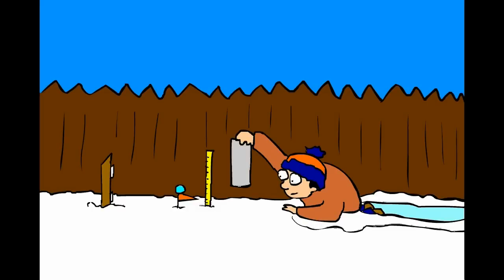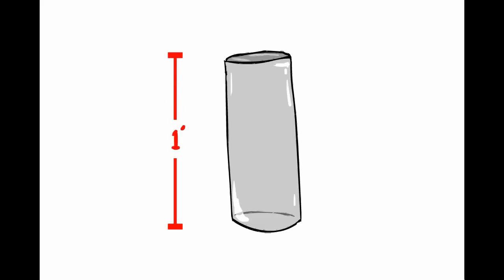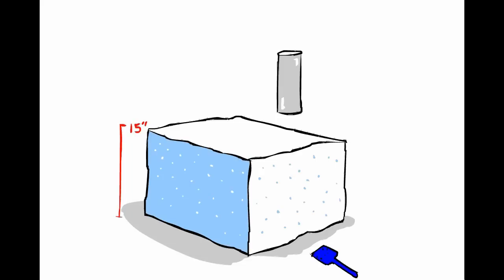This may have happened to you. You go to take a snow core sample when you have more than a foot of snow on the ground. The outer cylinder of your gauge is only a foot tall. What to do? Well, if it's not much more than a foot, say about 15 inches, you can often push the outer cylinder down towards your snow measurement board and compress the snow into the gauge.